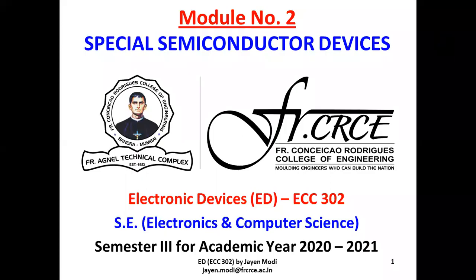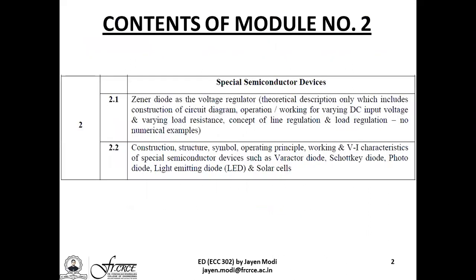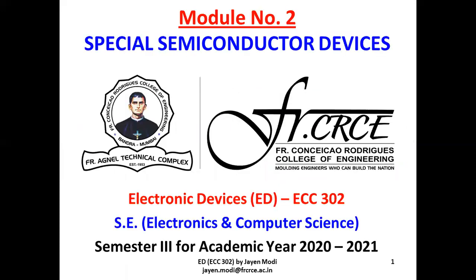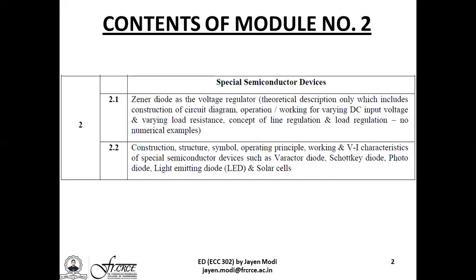Hello and welcome everybody to a brand new chapter, module number two titled Special Semiconductor Devices for the subject Electronic Devices, abbreviated ED, with subject code ACC 302. Welcoming the entire batch of SE Electronics and Computer Science semester 3. For this module number 2, the syllabus has two main units: unit 2.1 and unit 2.2. The main objective is to introduce students to different semiconductor devices apart from the PN junction diode already studied in module number 1.